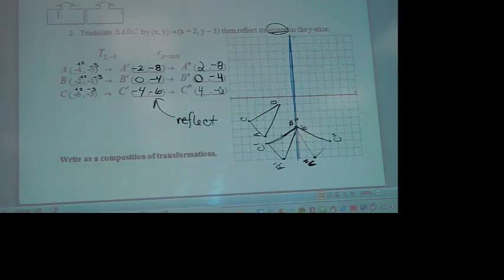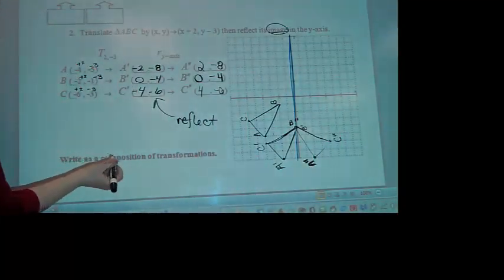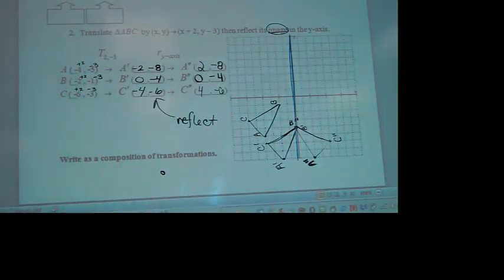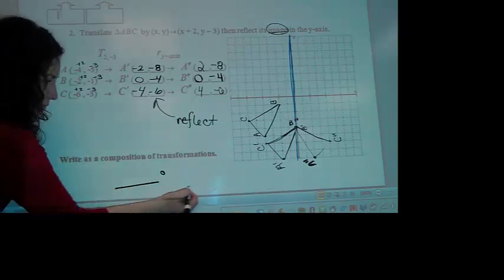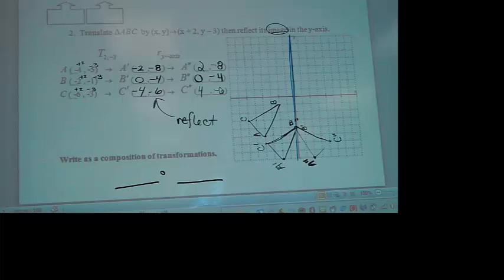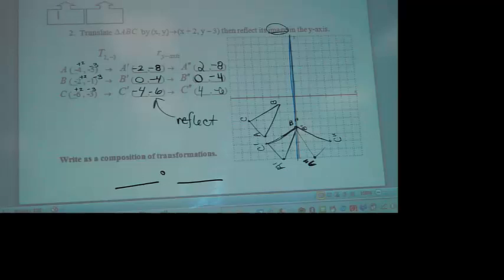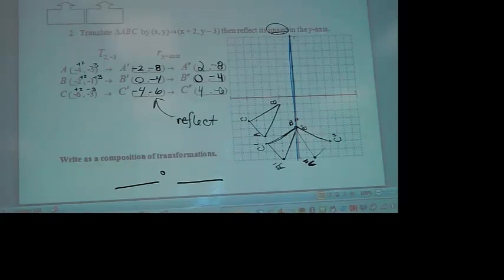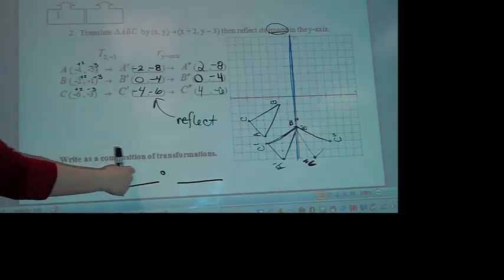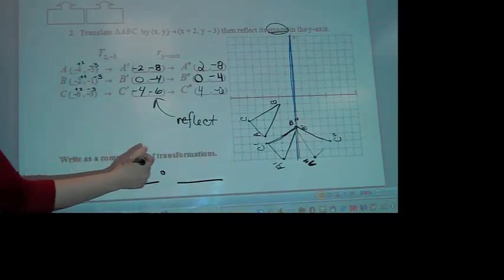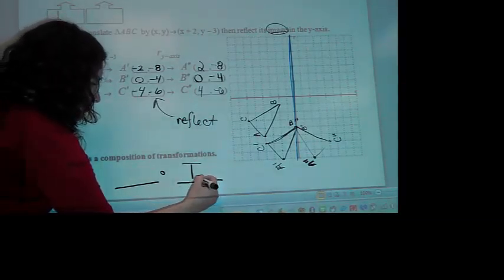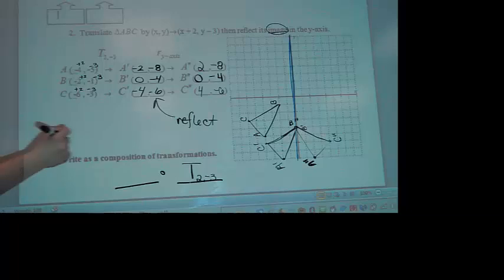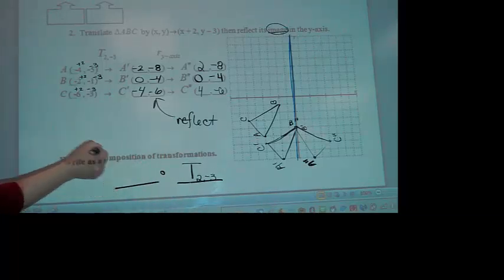So now, just again, just to get you used to writing it as a composition or seeing this circle again. There's going to be two things that we're going to put here because we did two things. You could also have a composition with three things or four things. But for this one, we only reflected and translated. So what did we do first? So where should we put that? Here or here? Last. So this would be the translation 2, negative 3. What we did next should be over here to the left of it. What did we do after that?